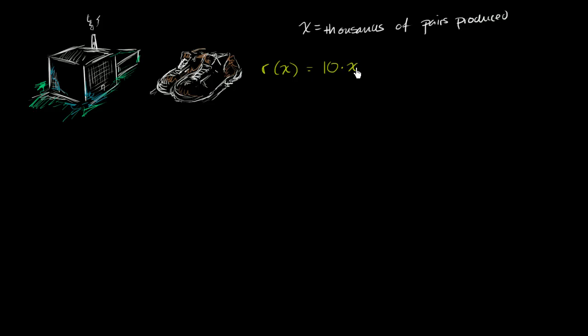And since x is in thousands of pairs produced, if x is 1, that means 1,000 pairs produced times 10, which means $10,000. But this will just give you 10, so this is in thousands of dollars. So if x is 1, that means 1,000 pairs produced. 10 times 1 says r is equal to 10, but that really means $10,000.